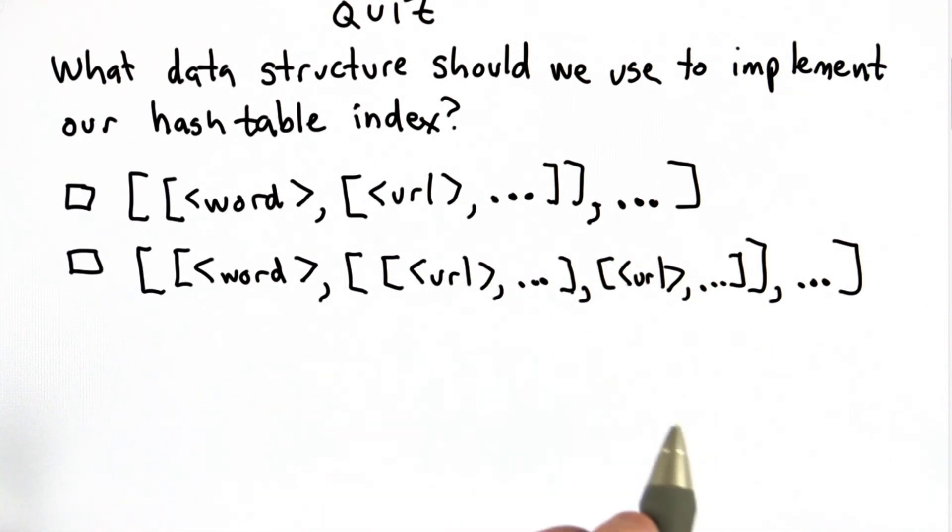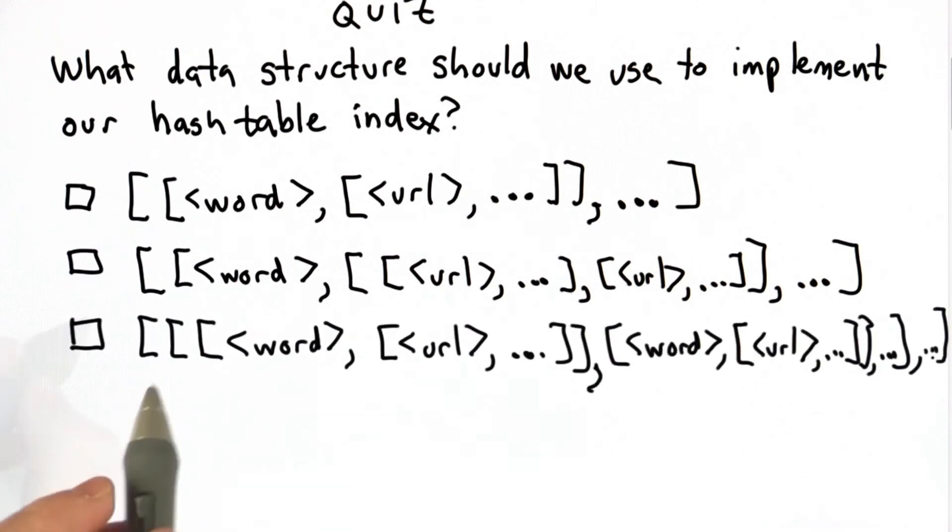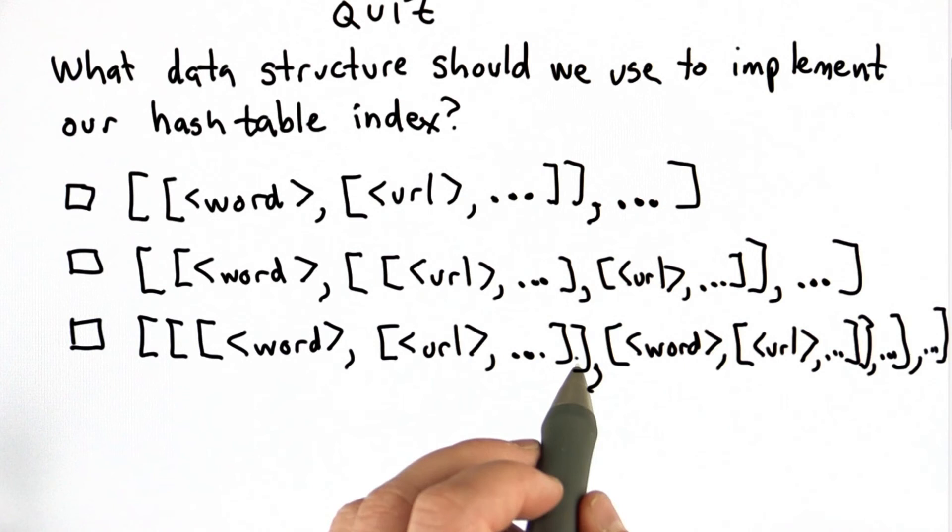The third choice is a list where each element is a list, where the element lists themselves contain lists, where the element lists of the element lists are a list of a word followed by a list of all the URLs where that word appears. We have three nested lists for choice 3.